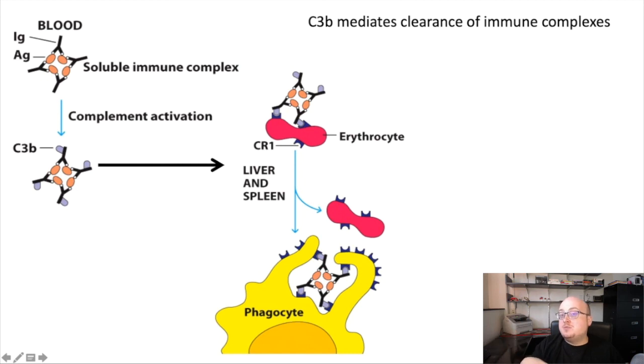And CR1 on the surface of those phagocytes kind of snatches the immune complex away from the red blood cell and allows it to be internalized. And so phagocytes then clear the immune complexes in tissues like the spleen and the liver. But the red blood cells are important because they're all over the body. And whenever they come across these immune complexes coated with C3B, they sort of take them and then transport them back to the organs, the liver and the spleen, so that they can be taken care of.